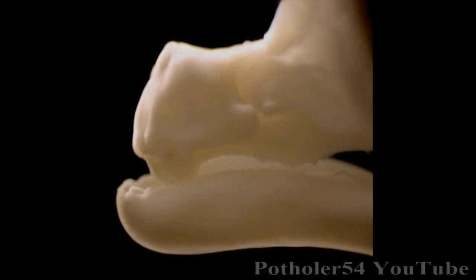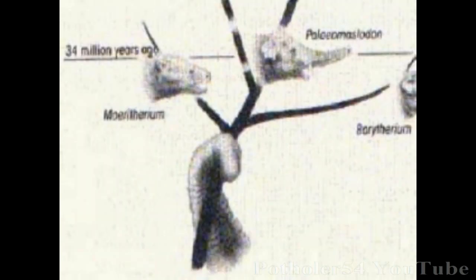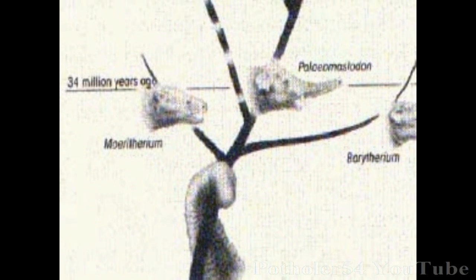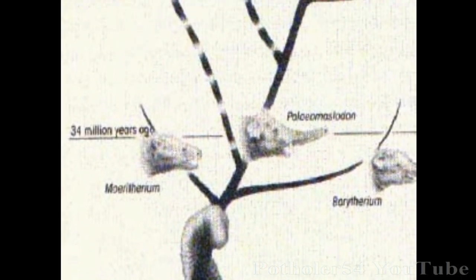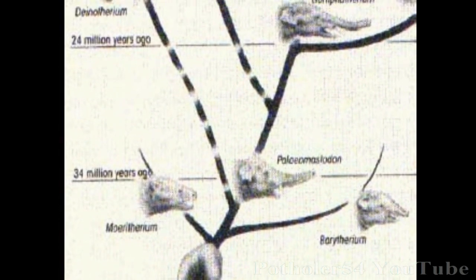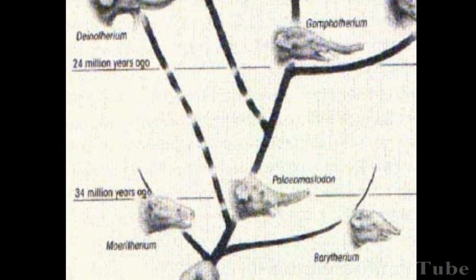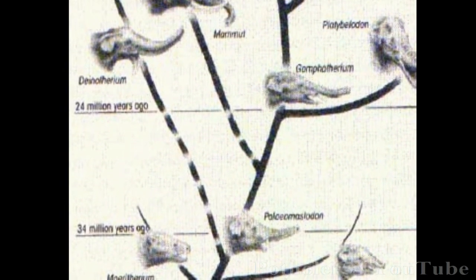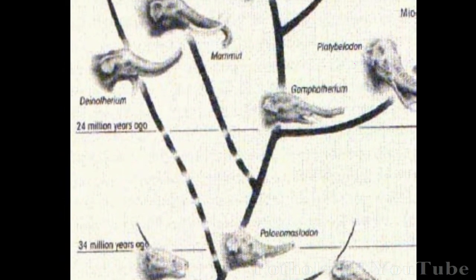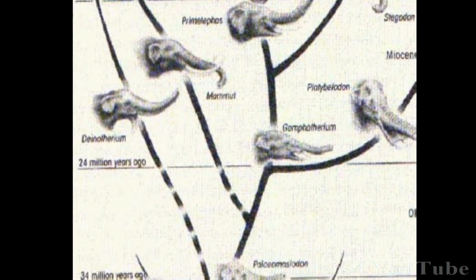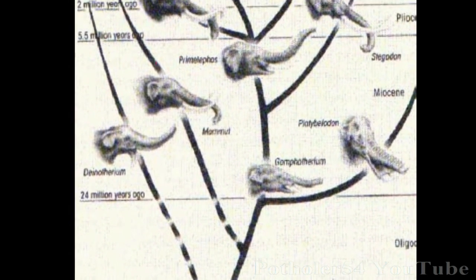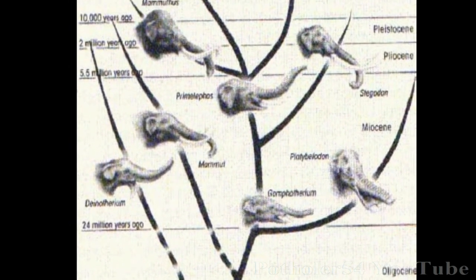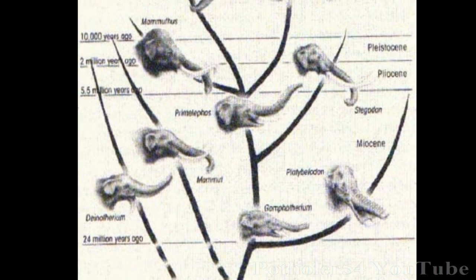One of the commonest misconceptions about evolution is that we never find a transitional form between one species and another. But the fossil record is full of animals changing from one kind into another. It's one of the reasons we know evolution happened. Every animal is a transition between what went before and what comes after.